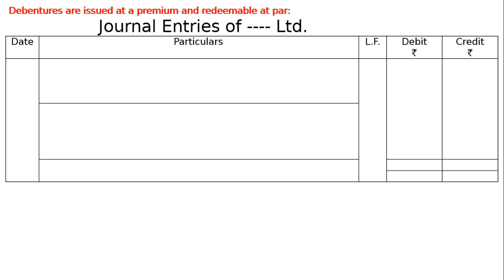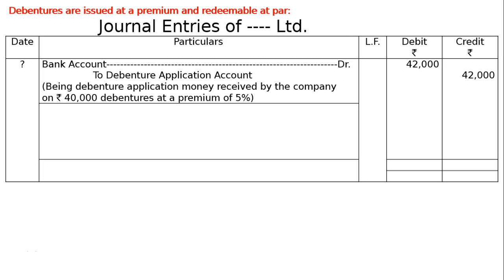The first entry will be: bank account debited to debenture application account. Since 40,000 debentures are issued at a premium of 5%, that is 5% of Rs 40,000 equals Rs 2,000. Hence, we will be getting application money of Rs 42,000 — Rs 40,000 as capital and Rs 2,000 as premium. Being debenture application money received by the company on 40,000 debentures at a premium of 5%.